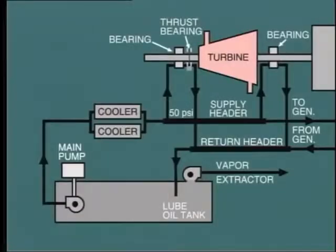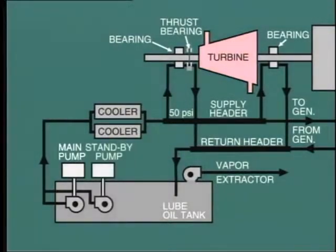The supply of lube oil is so vital to the operation of the turbine and generator that a standby pump must always be provided and maintained ready for startup on automatic control. But one question comes to mind: what would happen in the case that we lost all auxiliary AC power? This could happen, for example, in the case of a turbine generator trip in a facility with no station service backup. We'd then be faced with the prospect of the turbine generator running down without the circulation of lube oil, a condition that could conceivably damage all of the bearings.